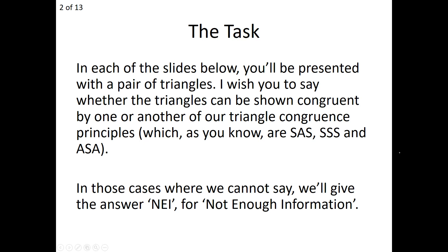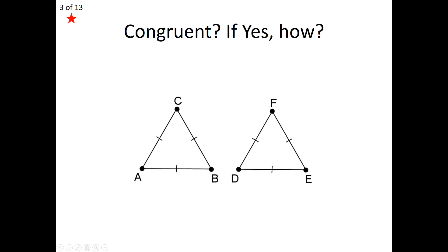Let's take a look at our first example. We have two triangles here, ABC and DEF. The question is: are they congruent? Can we satisfy one of our shortcuts of triangle congruence? In this case, the answer is yes — we can actually prove these two triangles congruent, and the reason why is side-side-side congruence. We know that the three sides of the first triangle are equal to the three sides of the second, which means these two triangles have to be congruent.